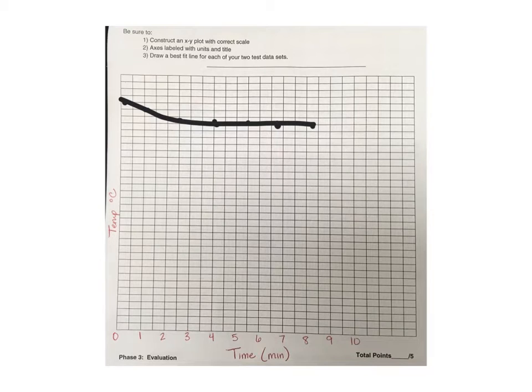You do not need a line of best fit because a best fit line assumes that you're testing different variables at each time point, but you are testing the same variable at each time point, so you can connect your dots. And if you tested your thermos twice, then you'll have two sets of dots, and so you can use two different colors or two different symbols.